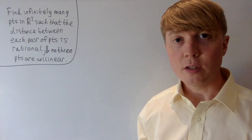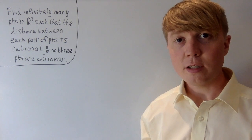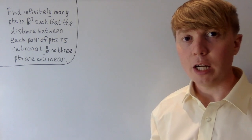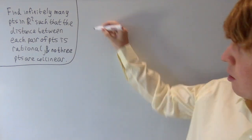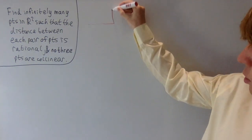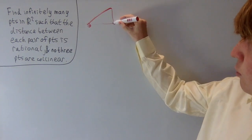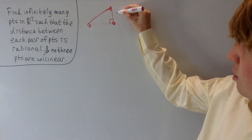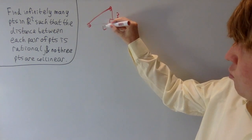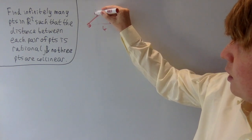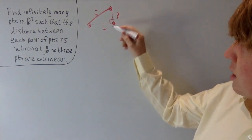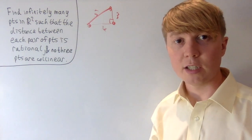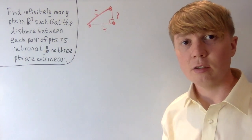We're going to look for points in 2D space where the distance between each pair of points is a rational number. Just for example, your 3-4-5 triangle — we take the points to be the vertices, so we've got distances 3, 4, and 5. The distance between each of these points is a rational number, so this would satisfy our condition.